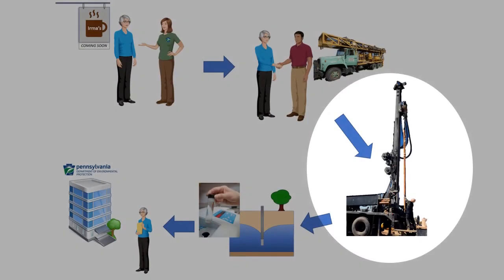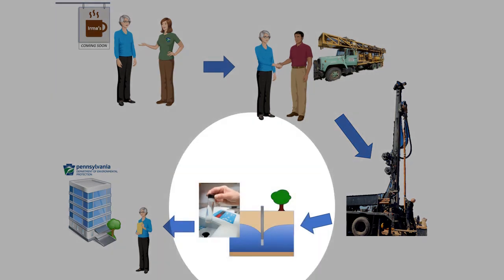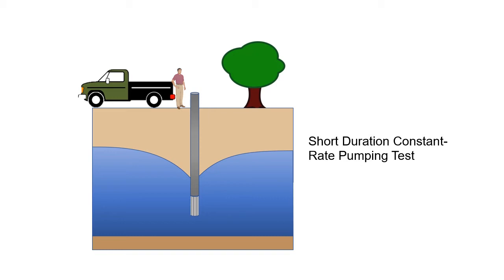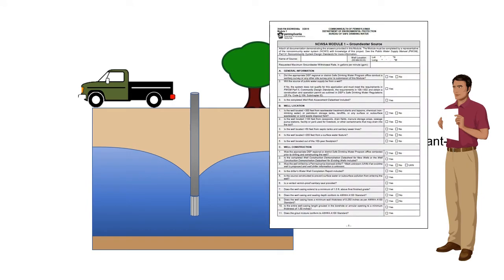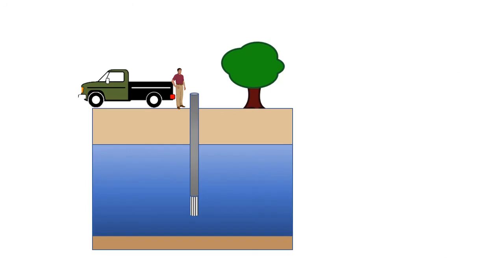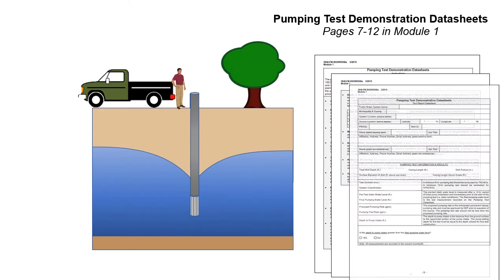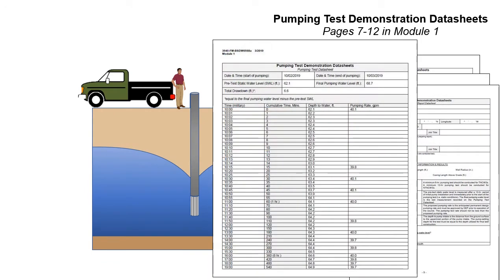After the well is drilled and properly developed, the fourth step is to confirm that the well produces enough water to meet system demand and that the water is of high quality. This is achieved by conducting a short duration constant rate pumping test. Ideally, the pumping test should be conducted by the driller shortly after the well is constructed. The applicant should make sure that their contracted pumping test operator has a copy of Module 1 prior to initiating the pumping test. The pumping test operator should perform the test in accordance with the pumping test demonstration data sheet's instructions and complete the data sheets found in the Module 1 application on pages 7 through 12.